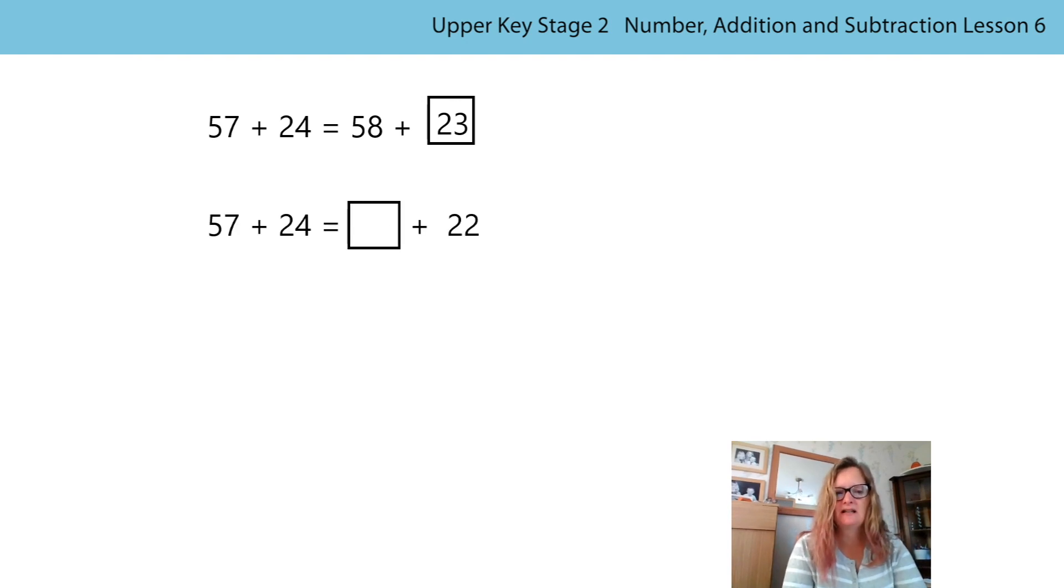What do you notice about this calculation? Well, these addends are the same as the ones above, and here though, the missing box is in a different place. So I know I need to look at the relationship and look at these numbers here, and what do you spot? Oh yes, 24 and 22. 22 is only 2 less than 24. I could work from the 57 as well, but that's a little bit more complicated. So if I subtract 2 from 24, I need to add 2 to the 57, and I get 59.